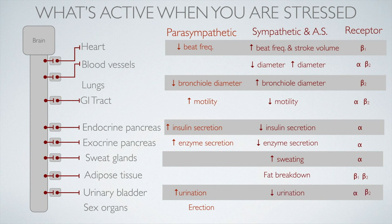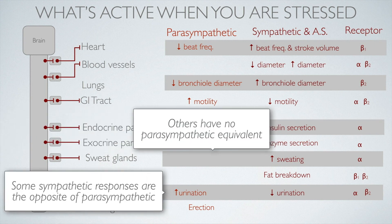For urination — under normal, non-extreme circumstances when running away from a threat, you're not thinking about urinating. Sympathetic inputs via alpha and beta-2 receptors cause a reduction in bladder wall tension. This illustrates that in some cases, certain organs have sympathetic responses with no parasympathetic equivalent, while others are simply the opposite: parasympathetic promotes urination, and sympathetic does the opposite.